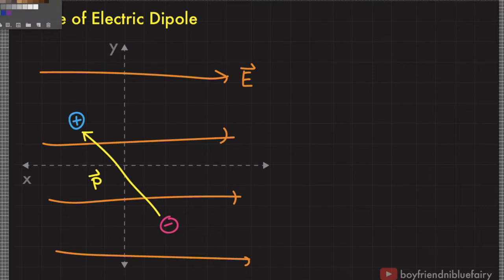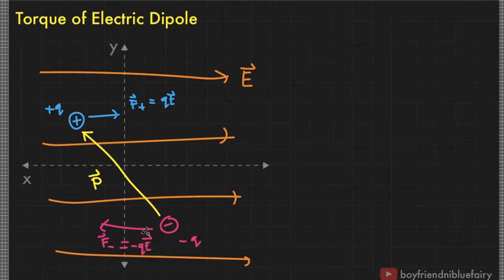When a positive charge is submerged in an electric field, it has a tendency to be pushed by the electric field and moves along the direction of the electric field. On the other hand, when a negative charge is submerged in an electric field, it has a tendency to move in the direction opposite to the electric field.